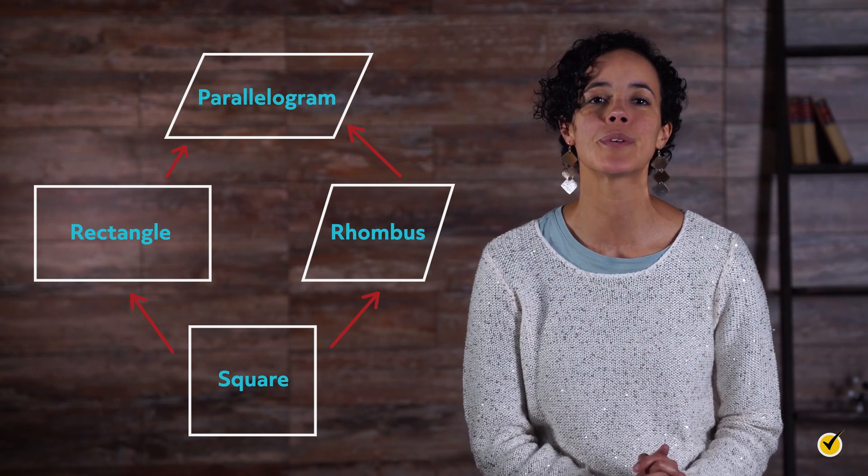Okay, let's explore the diagonals of these four quadrilaterals. A diagonal is a line segment connecting opposite vertices, or corners, of a quadrilateral.